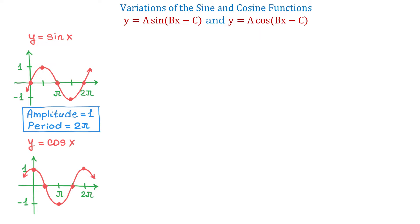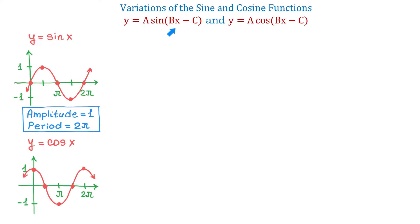The sine function passes through the origin, and the cosine function passes through the point (0, 1). Now, in the forms that we will discuss in this video, there is a number a in front of the function, a number b in front of x, and a number c that is subtracted from bx.